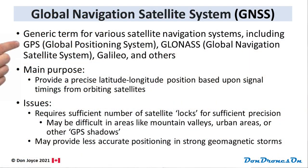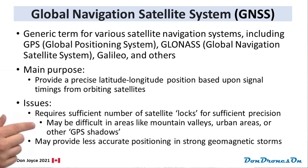The GPS, or Global Positioning System, is actually one of several global navigation satellite systems in operation, the other main ones being GLONASS and GALILEO. A GNSS system derives the drone's latitude and longitude based on signal timings from orbiting satellites. Generally speaking, the more sky your drone can see, the more satellites it will lock onto, and the more accurate the positioning. In urban areas with many tall buildings, and in mountain valleys, you will see fewer satellites.